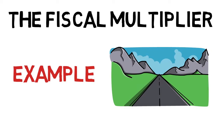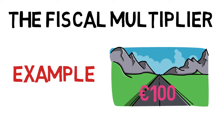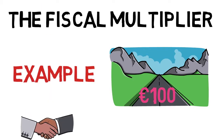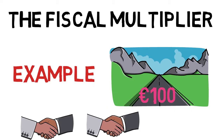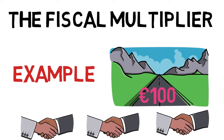The example we'll take is a government spending on a new motorway or highway. We're taking a simple example of 100 euro, and that 100 euro will generate different rounds of transactions. It will be only one set of money, but the number of times it's used to transact will increase GDP more than the 100 euro.